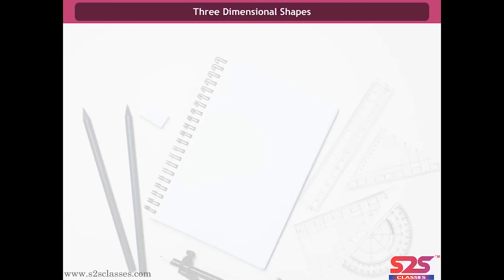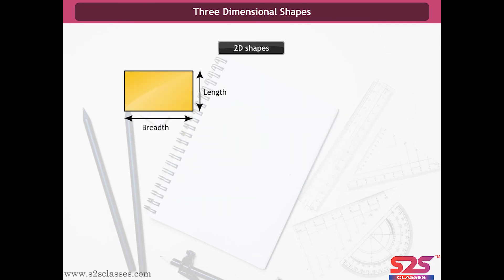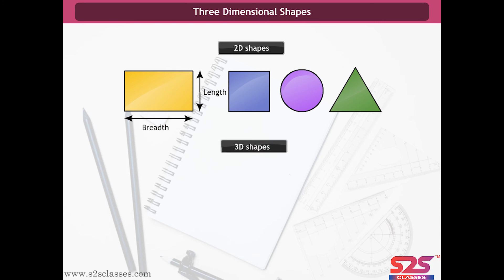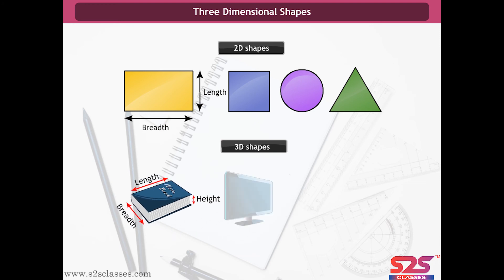Three-dimensional shapes. In the earlier chapters, we studied about plain or flat shapes which have only two dimensions: length and breadth. Now we will learn about three-dimensional shapes or solid shapes. A solid shape has length, breadth and a third dimension — height. We live in a three-dimensional world. Every object we see or touch has three dimensions. For example, a book, dice, television, water bottle and so on.